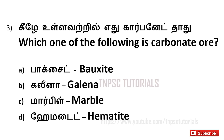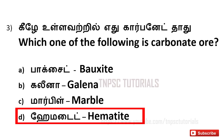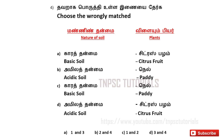Third, which one of the following is a carbonate ore? A. Bauxite, B. Galena, C. Marble, D. Hematite. And the answer is D, Hematite.